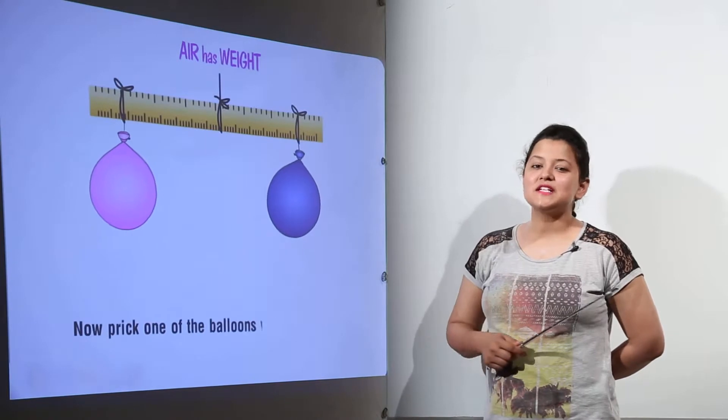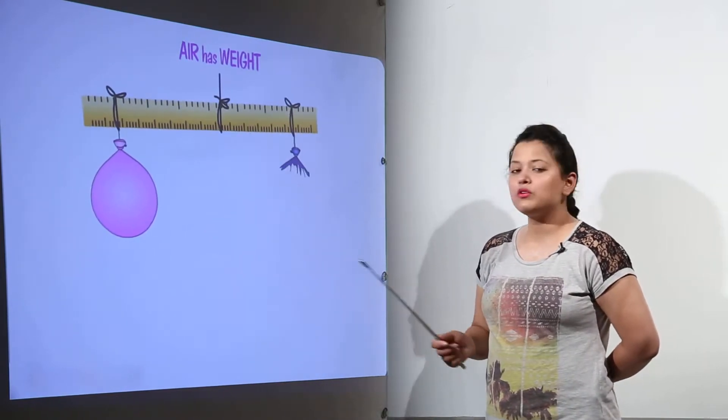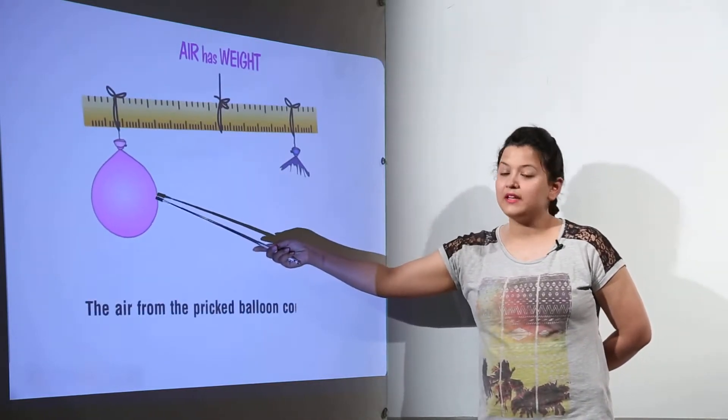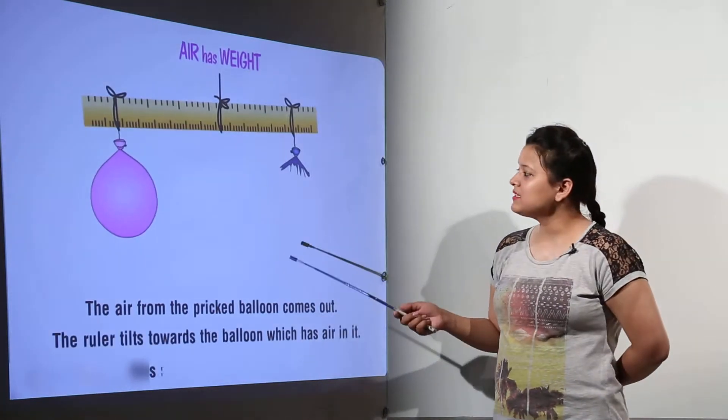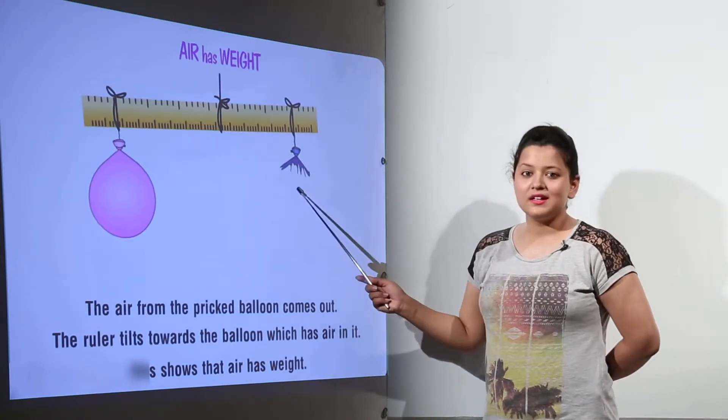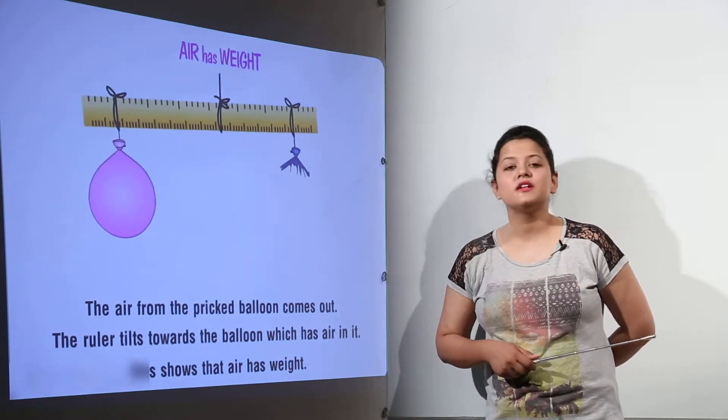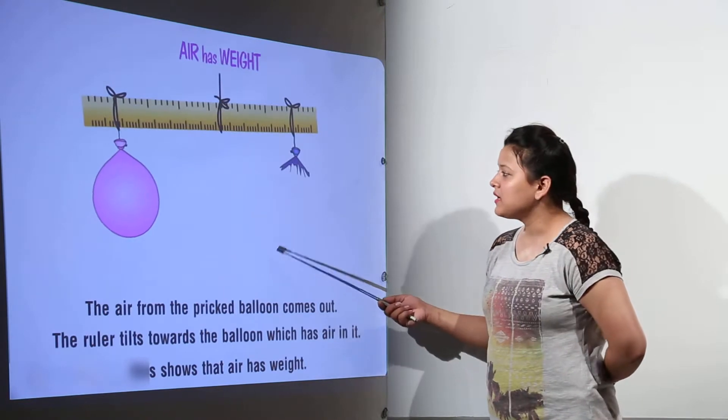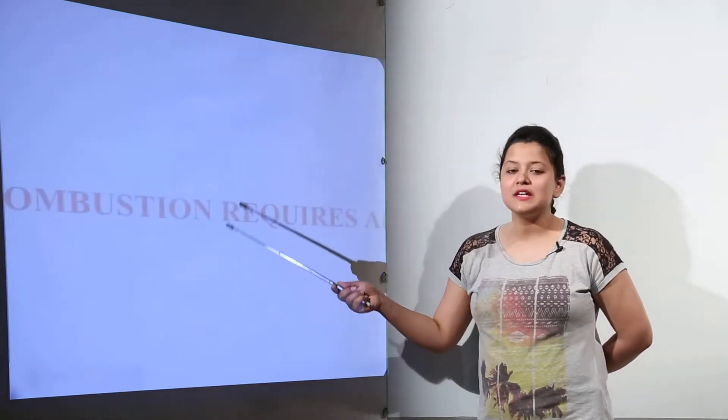Now for the experiment: take a pin and prick one of the balloons. You would notice immediately the ruler bends down from the side where the balloon is still inflated. That means it has more weight because the balloon has air in it. Therefore, we can conclude that air has weight, which is why it is able to bend the wooden ruler to either side.